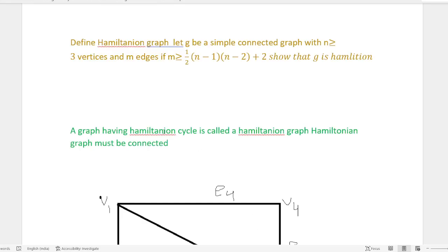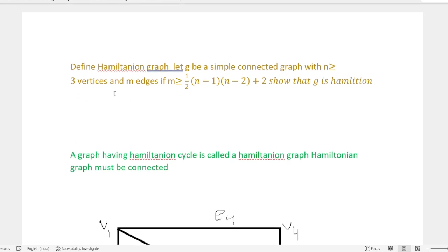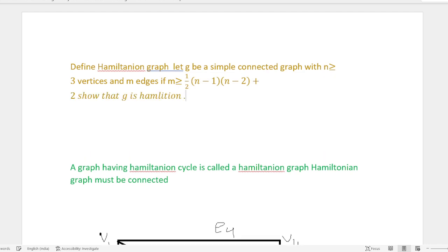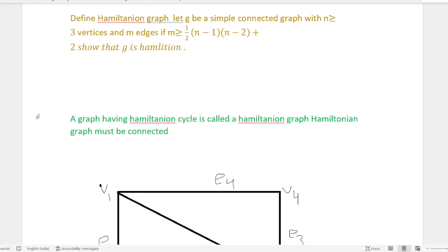Hi friends, in this video I discuss a very important question. Define Hamiltonian graph: Let G be a simple connected graph with n greater than or equals to 3 vertices and m edges. If m ≥ 1/2(n-1)(n-2) + 2, show that G is Hamiltonian.